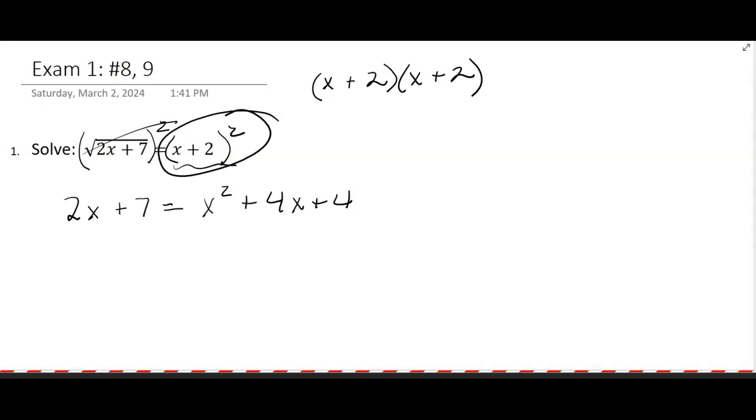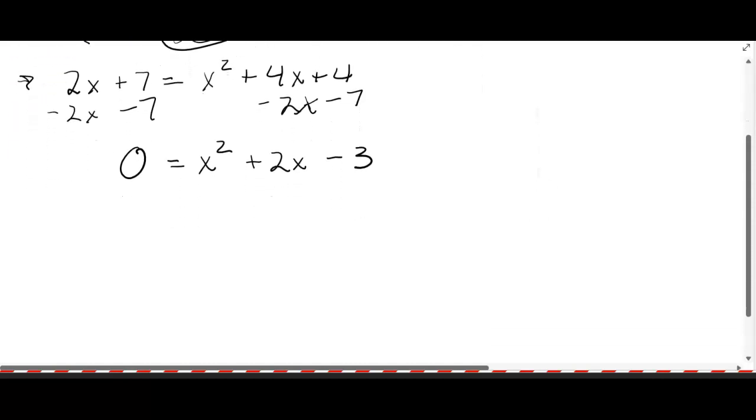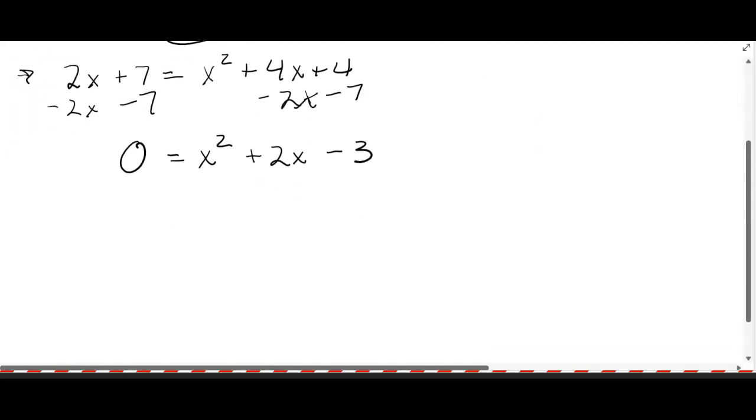Okay, this is now my new equation here without the radical, without the square root, but now it is a quadratic equation. I'm going to subtract 2x and I'm going to subtract the 7. And so I get 0 equals x squared plus 2x minus 3. And I'm going to hope that it factors. If it doesn't factor I would go to the quadratic formula or I might complete the square.